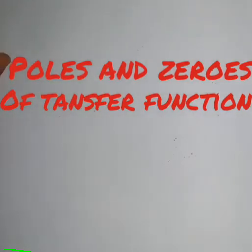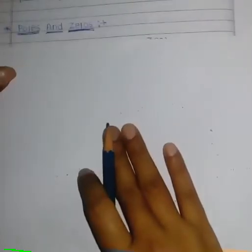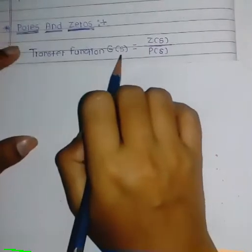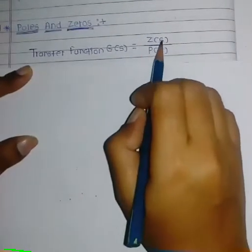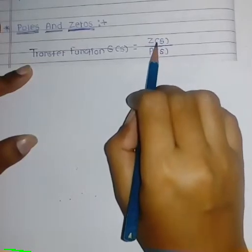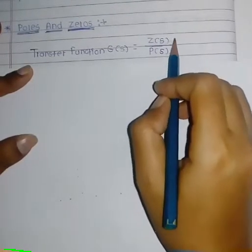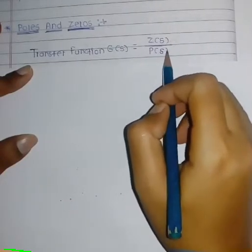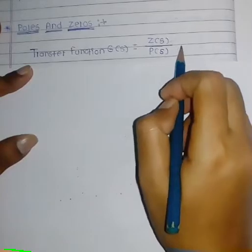Hello students, today we see the next topic that is poles and zeros in time response analysis. The first point is poles and zeros. This is the transfer function of poles and zeros: G(S) is equal to Z(S) upon P(S). Z(S) in the numerator is indicated as zeros, and P(S) in the denominator is indicated as poles.